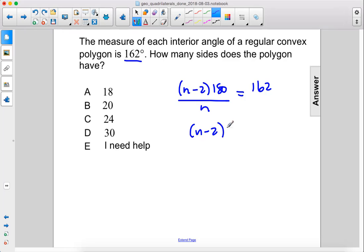n minus 2 times 180 equals 162 times n. Multiply n to both sides. We'll distribute this out.